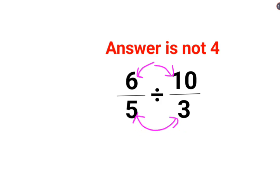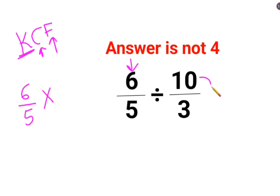So in this case what will happen here is, when you have division, you will follow the rule of KCF where K stands for keeping the first fraction as it is, that is 6 upon 5. C stands for changing the division sign to multiplication. And F stands for flipping or taking reciprocal of 10 upon 3 which is 3 upon 10.